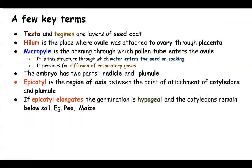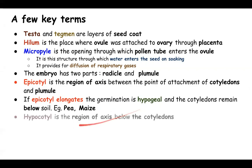If the epicotyl elongates, the germination is hypogeal — the cotyledons will remain below the soil, as in pea and maize. If the epicotyl elongates, the cotyledons will not get a chance to come above soil. Conversely, if the hypocotyl elongates, the cotyledons come above soil, and this is called epigeal germination, as in the case of bean.